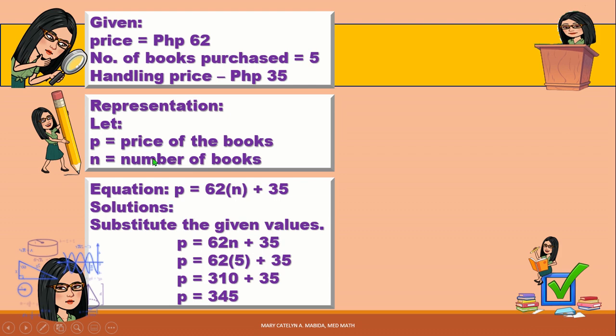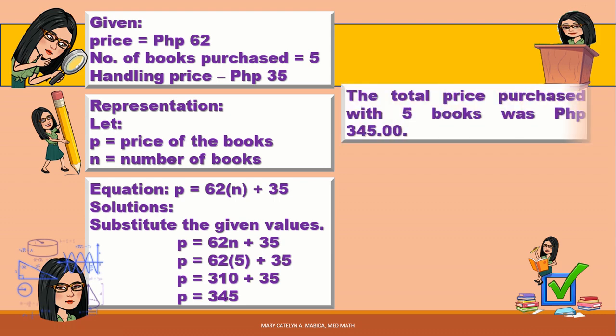Our N is the number of books, which is 5. So P equals 62 times 5 plus 35. Now, 62 times 5 is 310, plus 35 is equal to 345. Therefore, the total price for purchasing 5 books was 345 pesos.